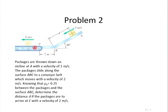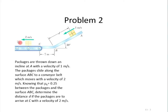We want the speed at point c to be 2 meters per second, so the final kinetic energy is known. The initial kinetic energy plus work done from a to b plus work done from b to c equals the final kinetic energy. We know all the components and just need to find distance d — giving a simple linear equation we can solve.